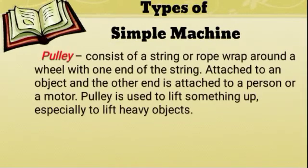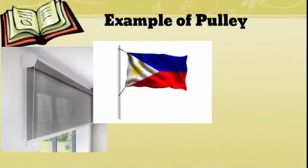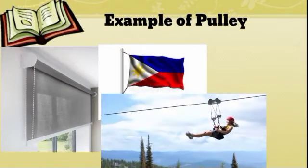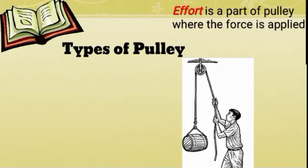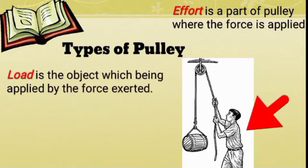Let us have the definition of pulley. Pulleys consist of a string or rope wrapped around a wheel with one end of the string attached to an object and the other end attached to a person or a motor. A pulley is used to lift something up, especially heavy objects. Examples of pulley are window blinds, flag poles, zip line, and cranes. We have the effort, which is the part of a pulley where the force is applied, and the load, which is the object being acted upon by the force exerted.